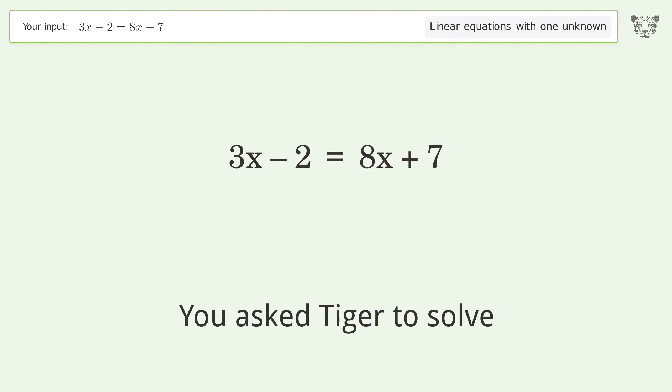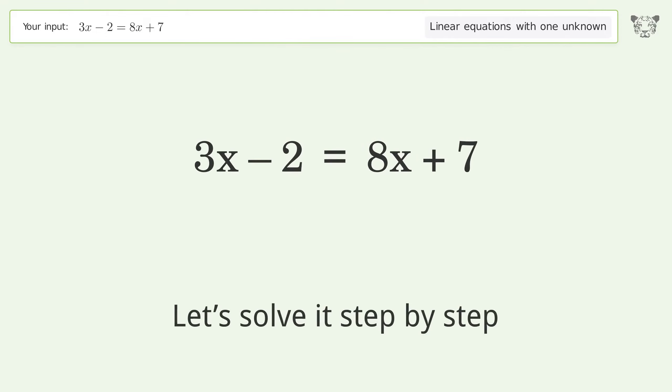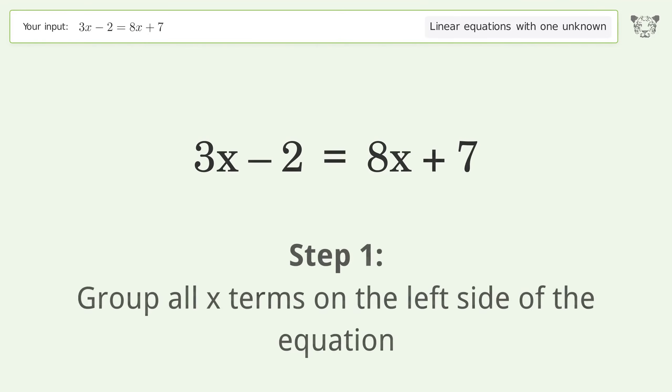You asked Tiger to solve this. This deals with linear equations with one unknown. The final result is x equals negative 9 over 5. Let's solve it step by step. Group all x terms on the left side of the equation.